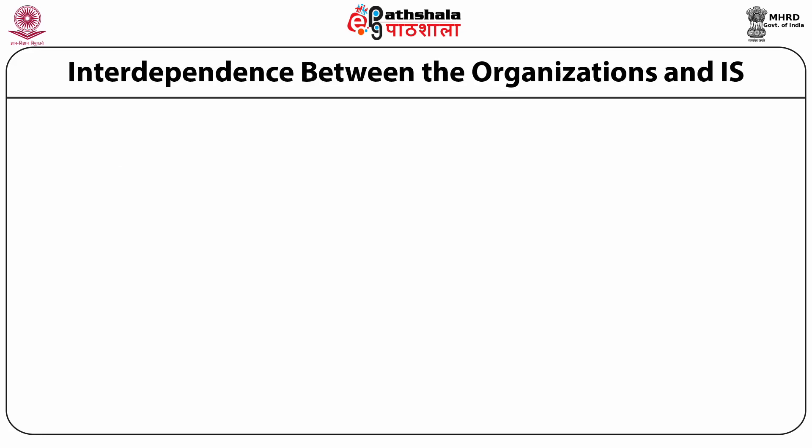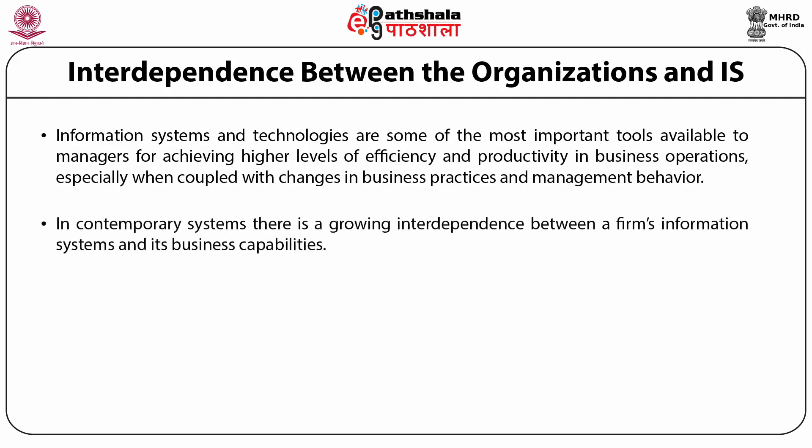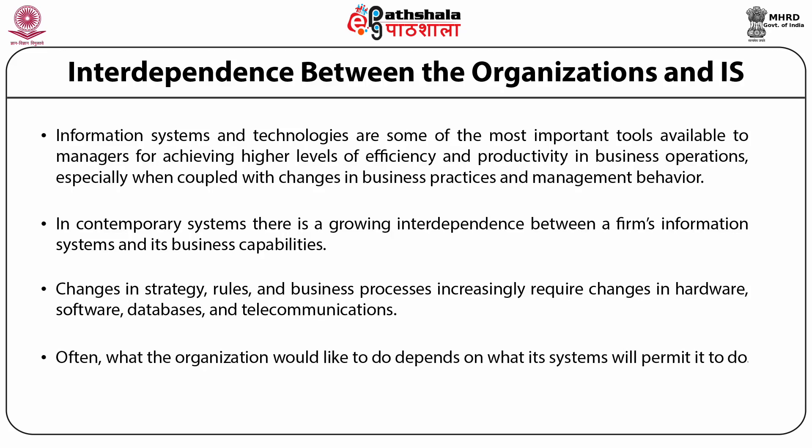Now we will look at the interdependence between organization and information systems. Information systems and technologies are some of the most important tools available to managers for achieving high levels of efficiency and productivity in business operations, especially when coupled with changes in business practices and management behavior. In contemporary systems, there is a growing interdependence between a firm's information systems and its business capabilities. Changes in strategy, rules and business processes increasingly require changes in hardware, software, databases and telecommunications, and what an organization would like to do often depends on what its systems will permit it to do.